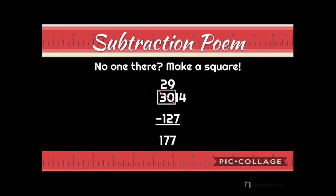But what if there's no one in the tens place? That's "no one there, make a square." I had a four in my ones place on top and a seven below again. But when I went to the tens to borrow one, I had a zero. So I made a square around the hundreds and the tens, and took away one group of ten from 30 tens, making it 29. I move that one in front of the four to make 14. Now: 14 minus seven is seven, nine minus two is seven, two minus one is one.